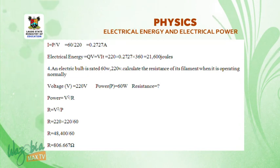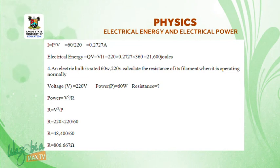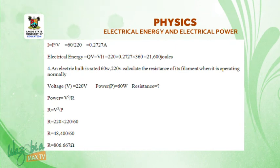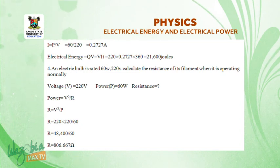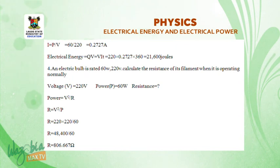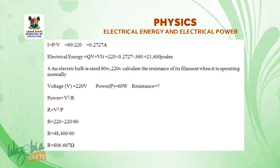Example 4: An electric bulb rated 60 watts, 220 volts. Calculate the resistance of its filament when operating normally. Using P = V²/R, making R the subject: R = V²/P = (220 × 220)/60 = 48,400/60 ≈ 806.667 ohms.